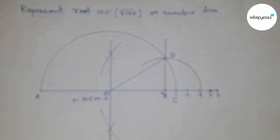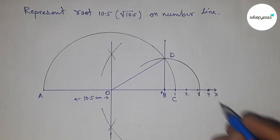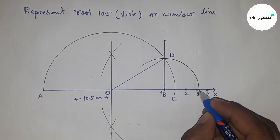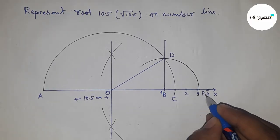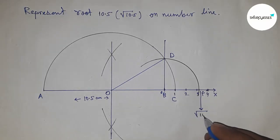So this is the representation of root 10.5 on number line. This is root 10.5 on number line.